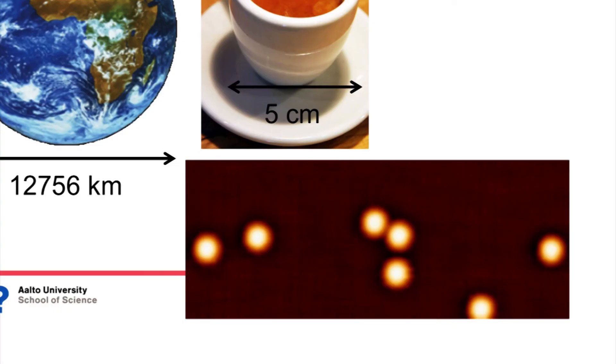Here's a scanning probe microscopy image of a surface with individual gold atoms. Each blob here is a single gold atom. Let's see how these techniques work and what we can do with it.